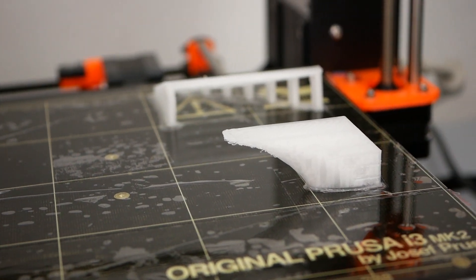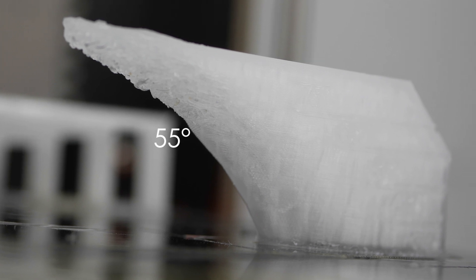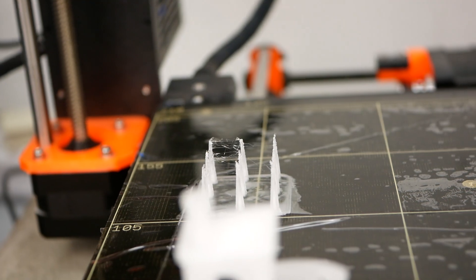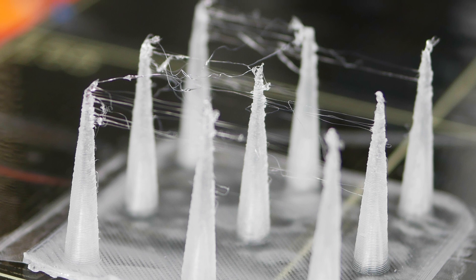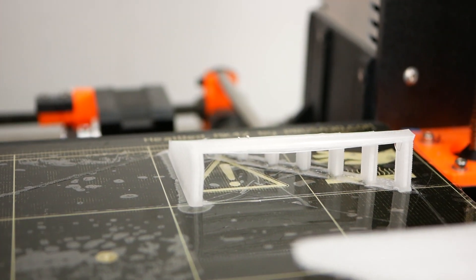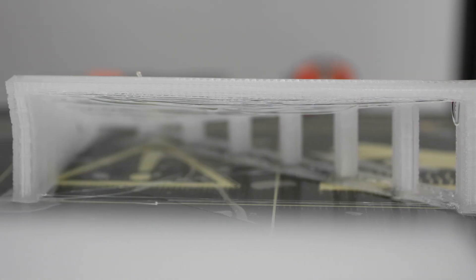The overhang test was only okay - angles printed up well to 55°C, anything more didn't look that good. The stringing and detail test was good, with only in the real upper part some hair starting to show and some details on the tips lost. Bridging was okay and the results didn't look horrible, but the results are quite far away from PLA.